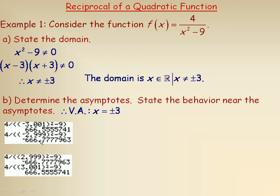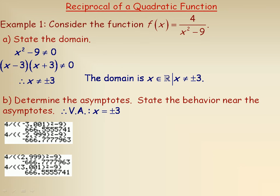These two graphics are screen captures from my virtual calculator, intended to show the behavior close to x equals 3 and close to x equals negative 3. The top one shows substituting values close to negative 3: negative 3.001 is just a little bit to the left of negative 3, and negative 2.999 is a little bit to the right. The function value at negative 3.001 is 666.55 — a very large positive number — indicating that as you approach negative 3 from the left, the y value becomes extremely large positive.